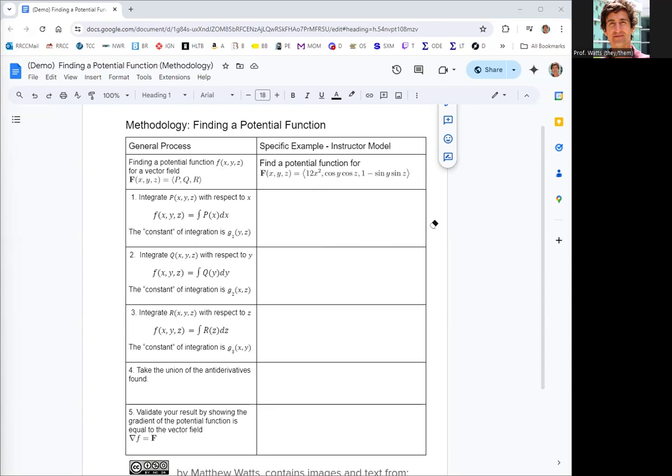So the thing to keep in mind is since we have three variables, three independent variables, that the constant of integration we normally get with an indefinite integral is actually a function of the other two variables that you're not integrating with respect to. So you'll see that play out. And the notation can vary quite a bit. I kind of chose to use lowercase g for all those functions, and then do subscripts one, two, and three. I feel like the book tries to use different letters, but I don't think it works as well. All right, so with step one, and you can do these in any order, steps one, two, and three, I just go in alphabetical order x, y, then z.